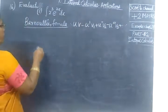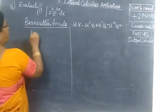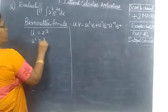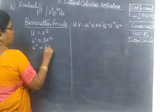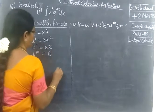In the question, let U equal to x³. Therefore, U' equals 3x², U'' equals 6x, and U''' equals 6.